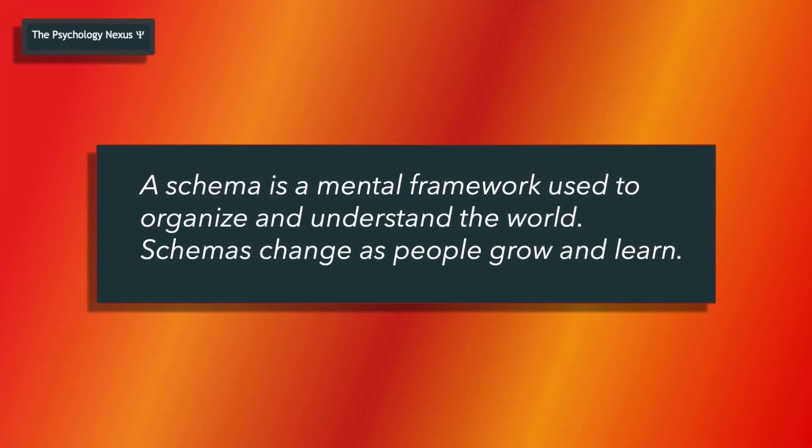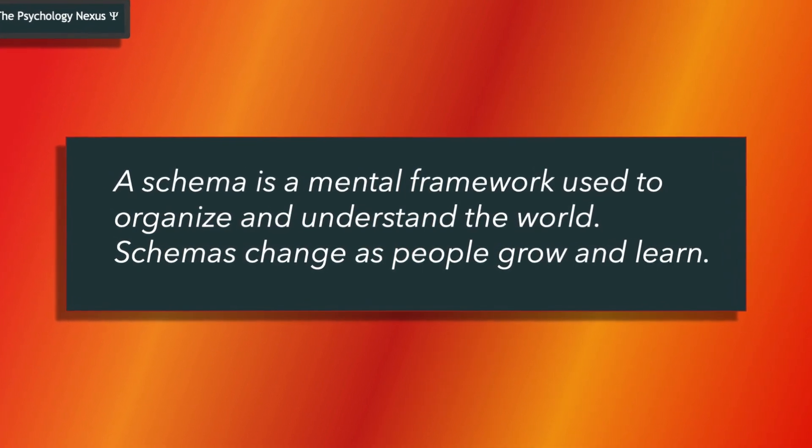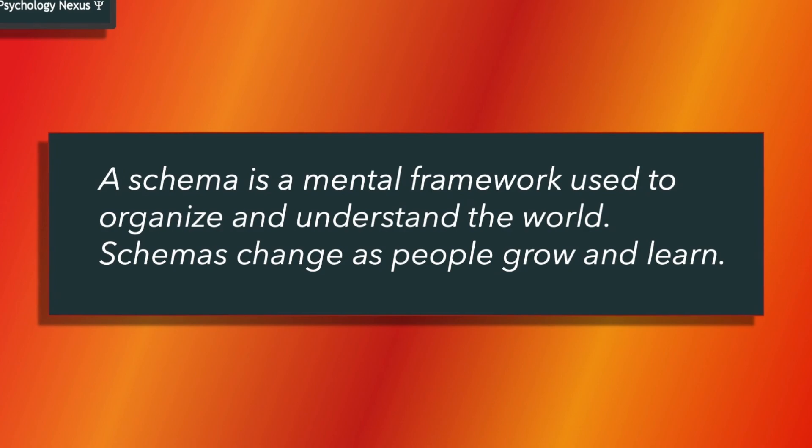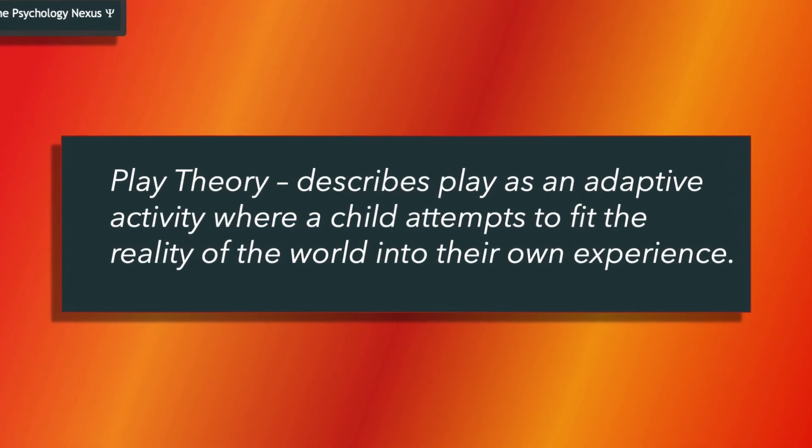Piaget developed three more theories. His schema theory explains how people of all ages develop concepts by building simple ideas into complex ones. In his play theory, play is seen as an adaptive activity where a child attempts to fit the reality of the world into their own experience, mainly through a process Piaget called assimilation, or taking in. On the other hand, imitation — the process where a child changes their behaviour through copying others — relies on a process Piaget called accommodation, or change.